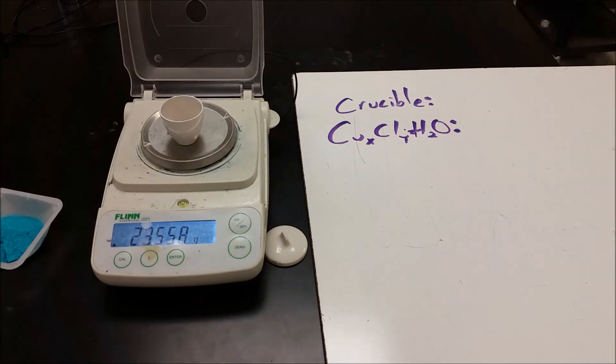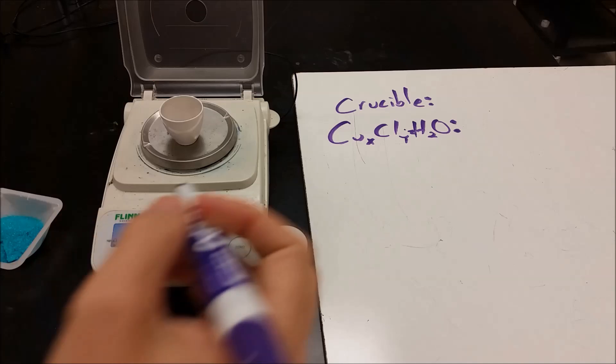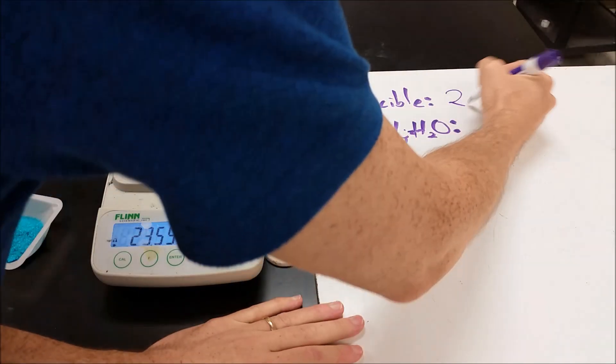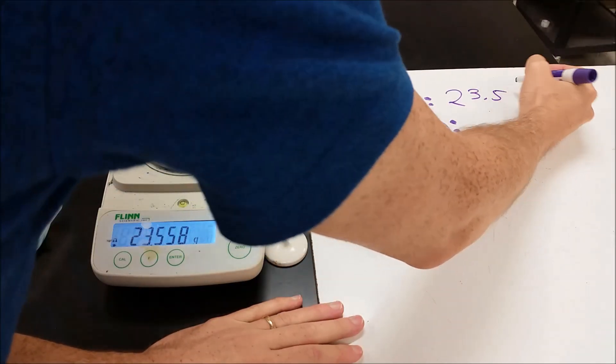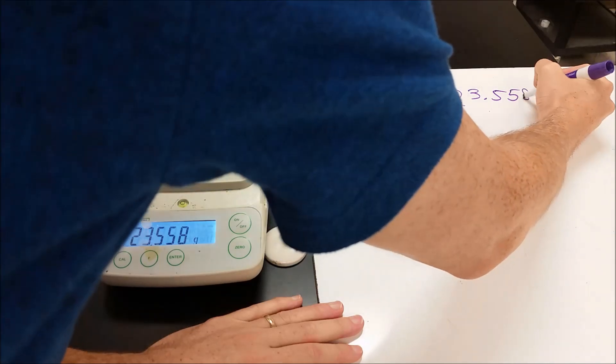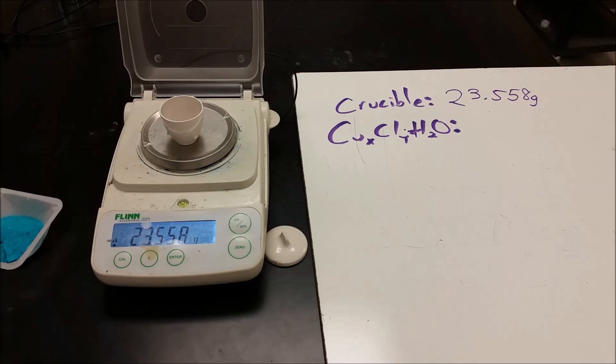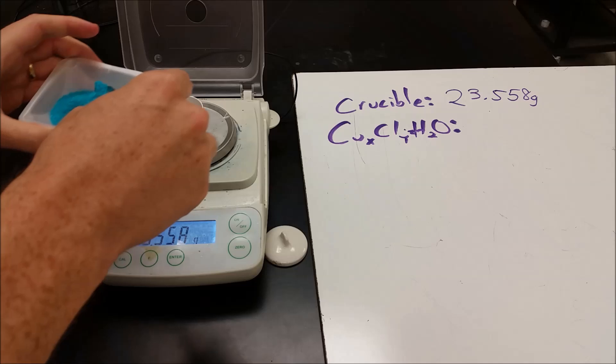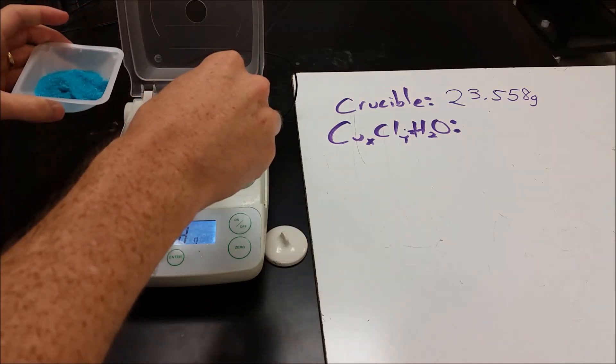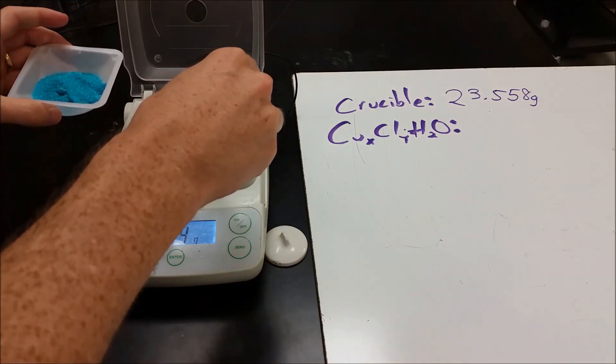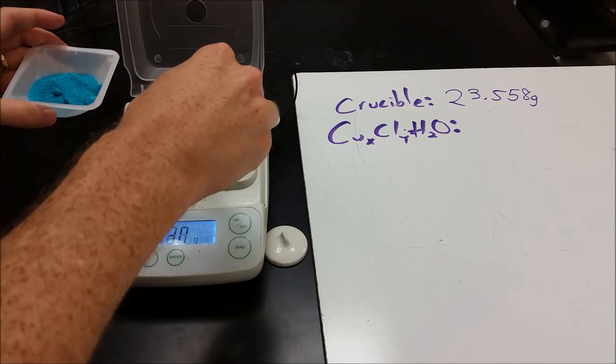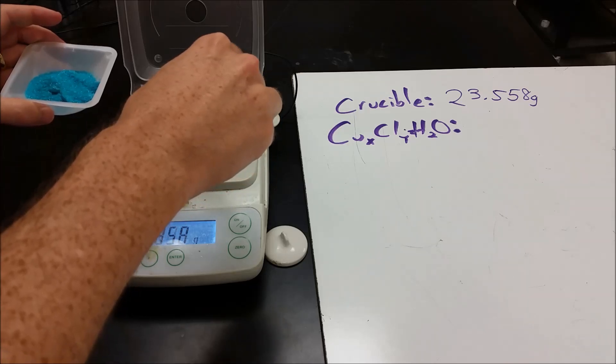So our empty crucible, and then we're going to add in our mystery copper chloride hydrate until we get at least a gram.